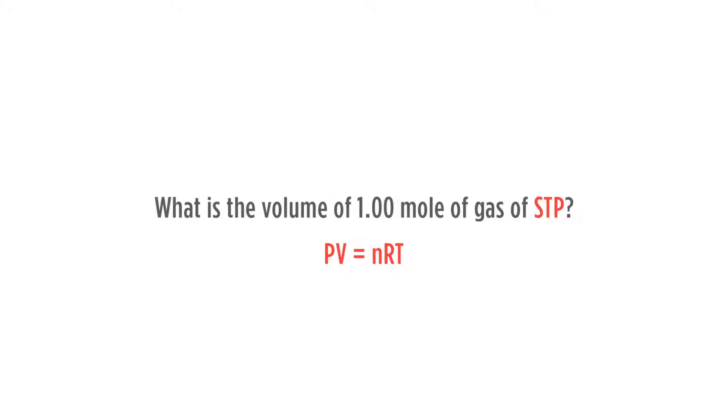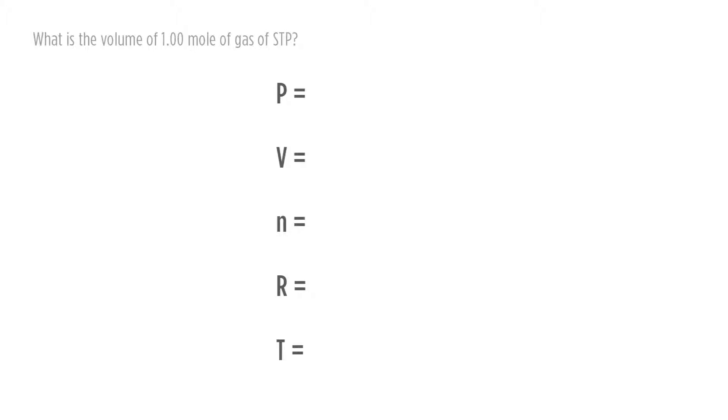Let's work a couple problems. What is the volume of one mole of gas at STP? If we look at this problem, we'll see that we're most likely going to be using the ideal gas law, PV equals nRT. Therefore, we can dissect the question by looking at what's going on. What is the volume? If we draw out PV equals nRT from that first part of the question, we know that we're going to be looking for our volume.